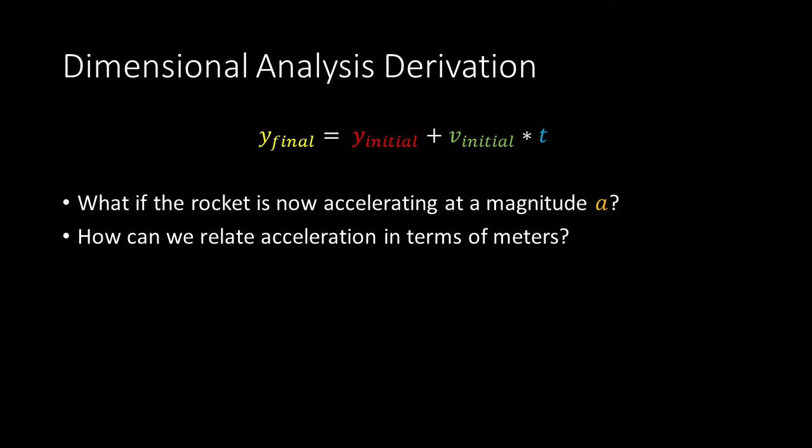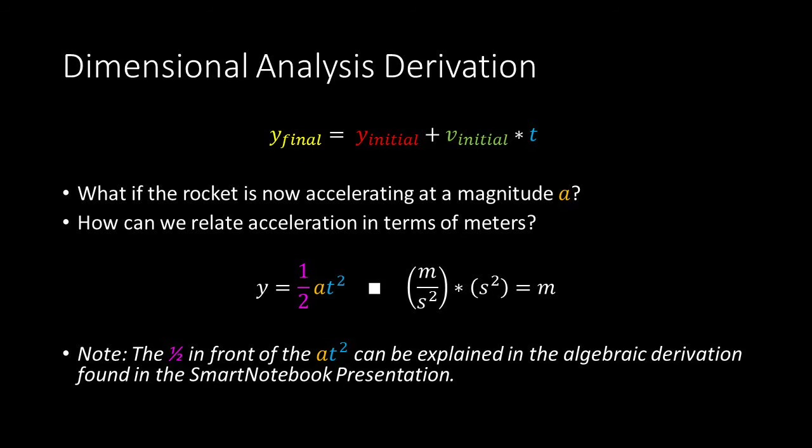Well, what if the rocket is now accelerating at a magnitude a? How can we relate acceleration in terms of meters? Well, we could state that the distance covered y is equal to one-half acceleration times the time squared. This is because meters per second squared times seconds squared gives us meters.